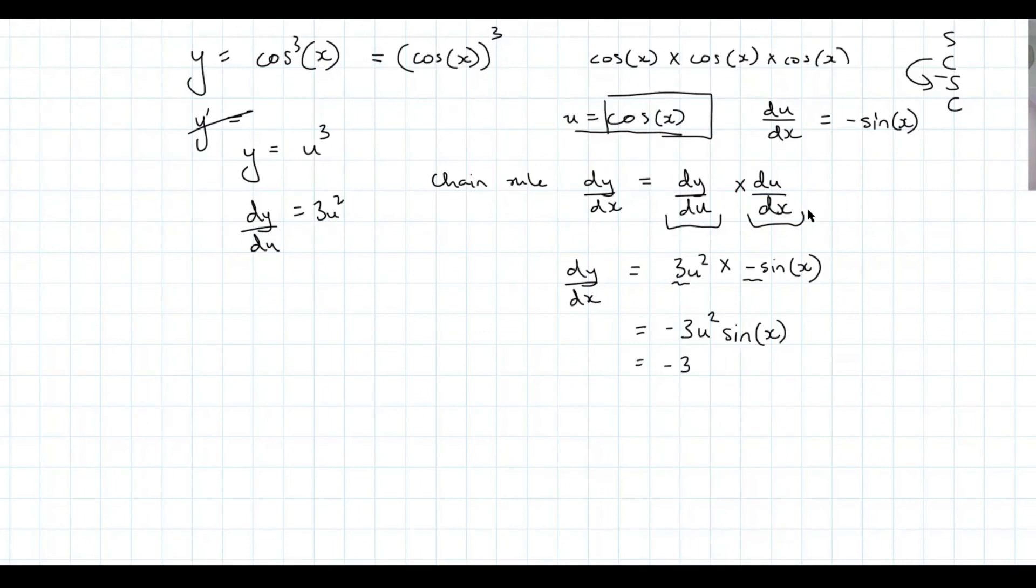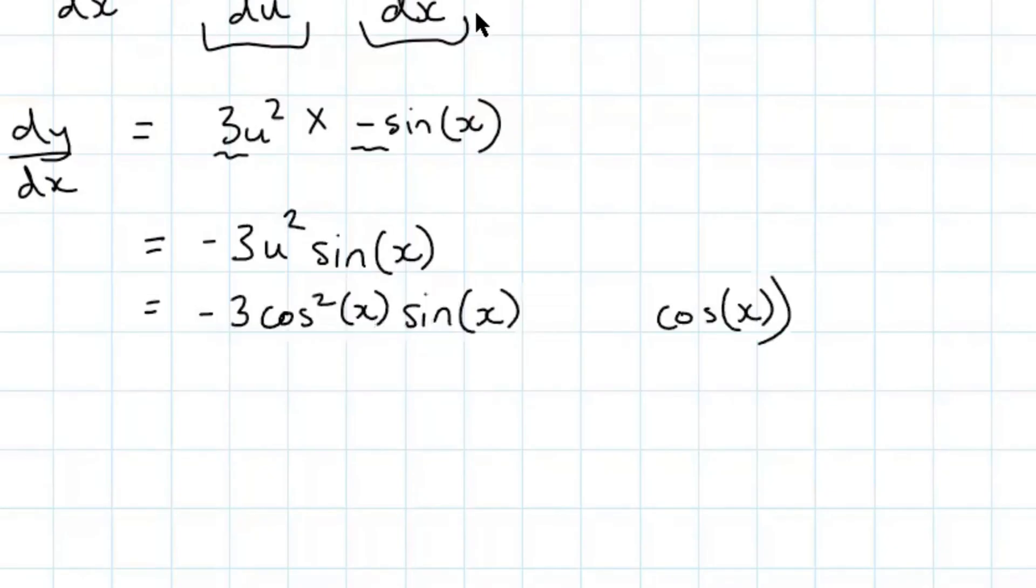So that's going to be negative three, cos squared x, sine x. Yeah. So yeah, just remember cos x, all of it squared, can be written as cos squared x. So it ends up being this then.